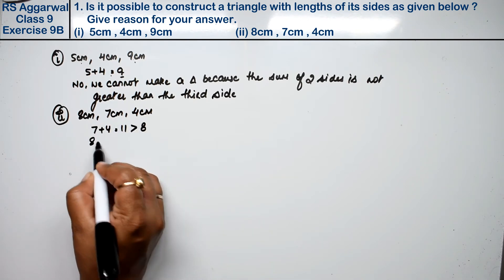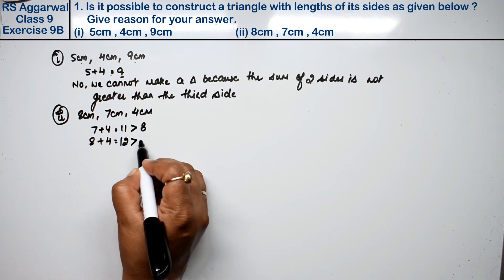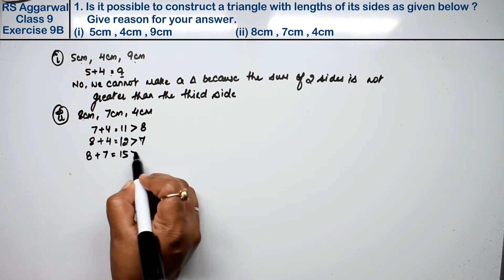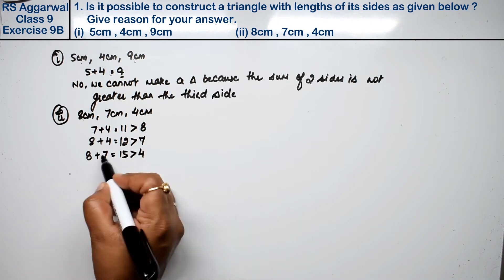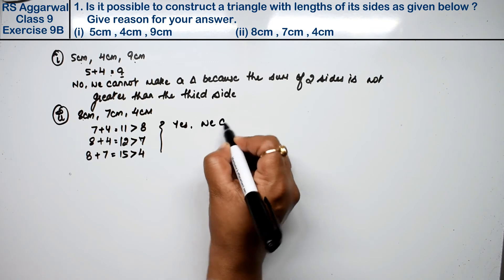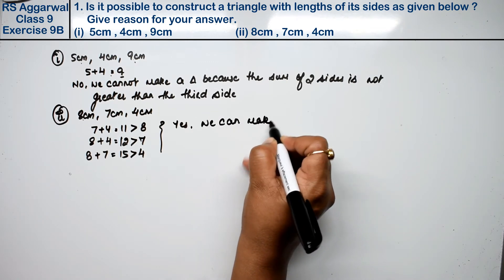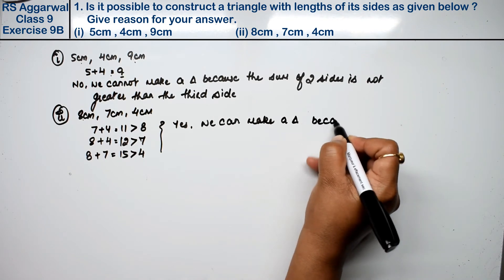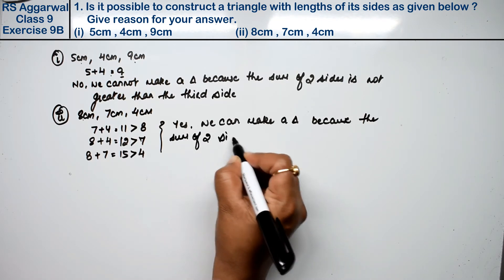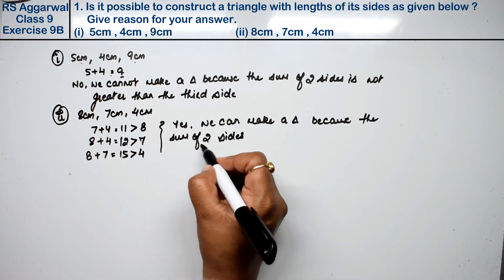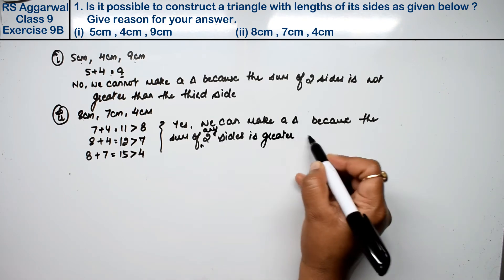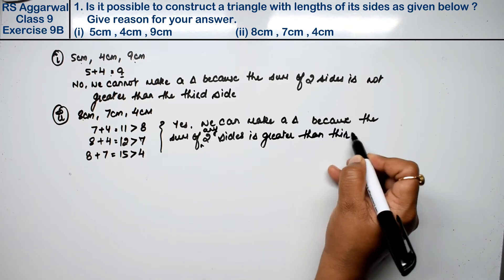Next: 8 plus 4 equals 12, which is greater than 7. And 8 plus 7 equals 15, which is greater than 4. In this case, yes — we can make a triangle, because the sum of any two sides is greater than the third side.